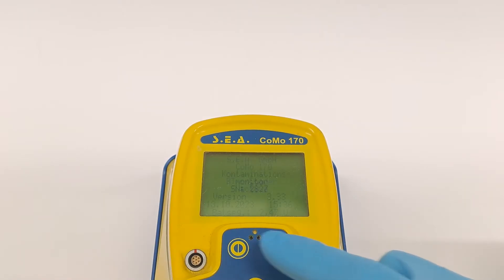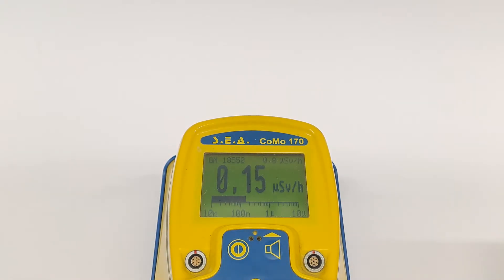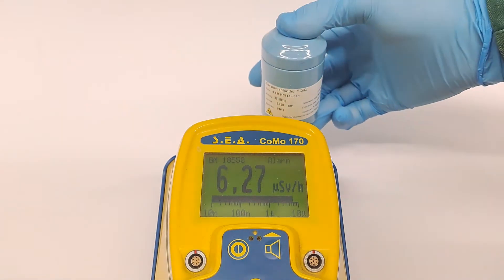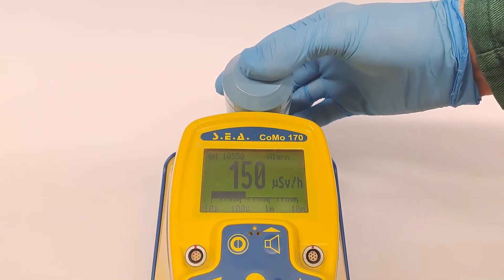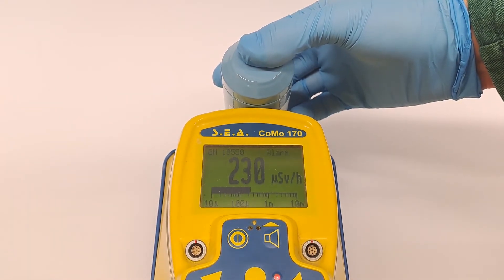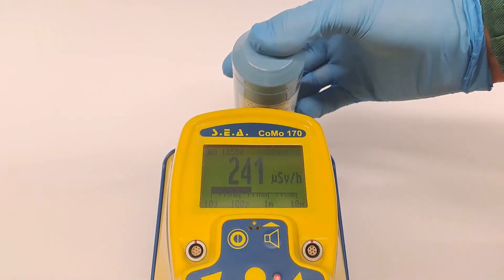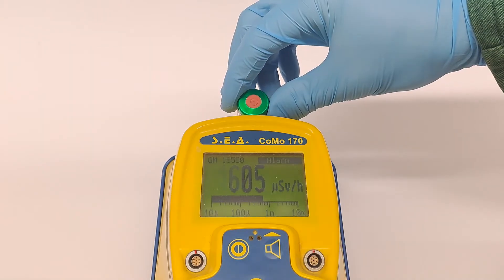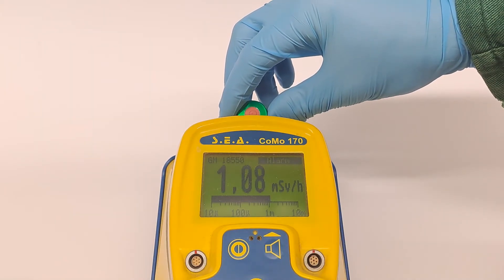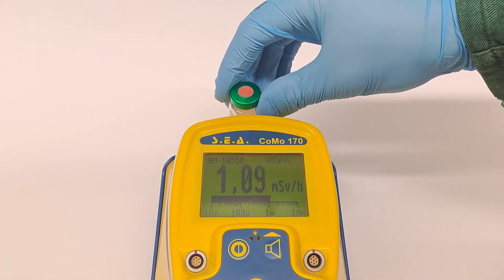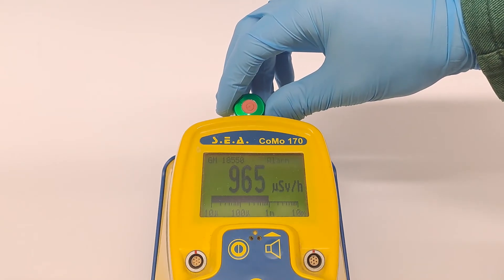The gamma dose rate, even inside the lead container, registers around 241 microsieverts an hour, which is about 2000 times the normal background radiation. Without the lead shielding, we can measure a dose rate of 1.94 millisieverts an hour, nearly double the annual radiation exposure limit in just one hour.